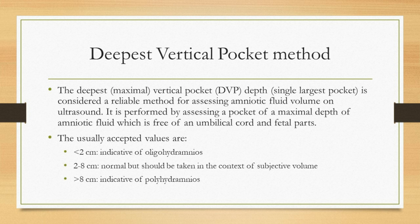Deepest vertical pocket method: The deepest vertical pocket depth is considered a reliable method for assessing amniotic fluid volume on ultrasound. It is performed by assessing a pocket of maximal depth of amniotic fluid which is free of an umbilical cord and fetal parts. The usually accepted values are: less than 2 centimeters, indicative of oligohydramnios (reduced fluid volume); 2 to 8 centimeters being the normal range; and more than 8 centimeters, indicative of polyhydramnios.